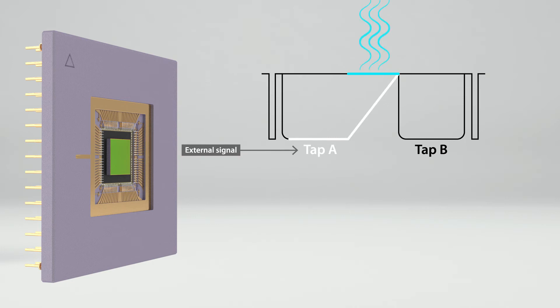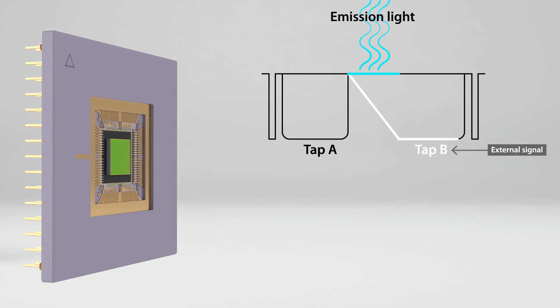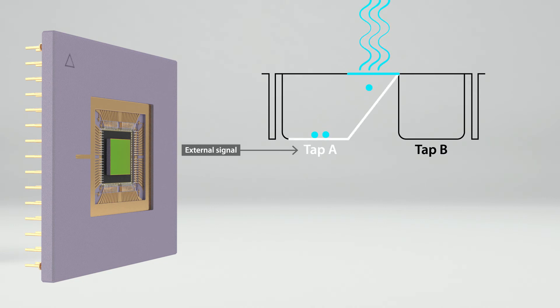An externally applied two-level modulation signal controls whether the generated charge carriers pass through tap A or tap B. By modulating the excitation light and the image sensor at the same frequency, specific phase shifts can be measured in each pixel. At phase 0, tap A is active, all charge carriers are collected in charge bucket A. This is image I1.